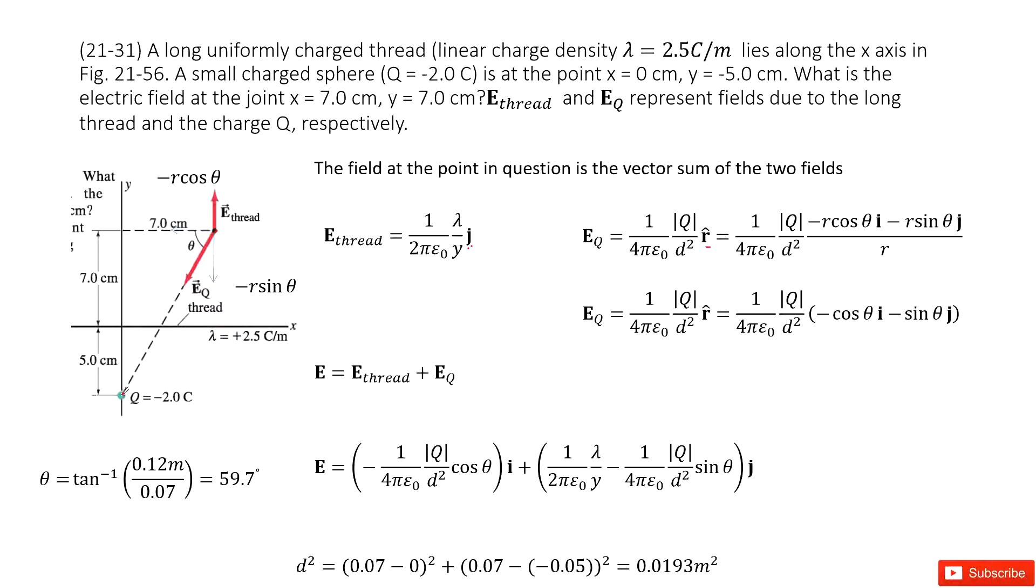We can look at the unit vector r pointing toward the particle charge. We can project it in the x-direction and y-direction. If the vector length is r, projecting in x-direction gives negative r cosine theta, and y-direction gives negative r sine theta. We divide by r to get the unit vector: negative cosine theta i minus sine theta j.